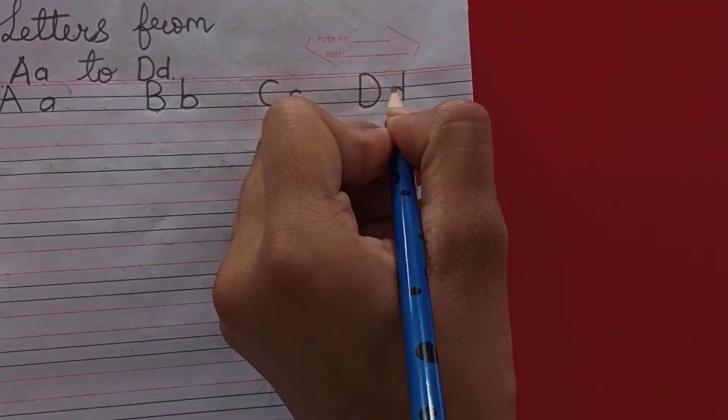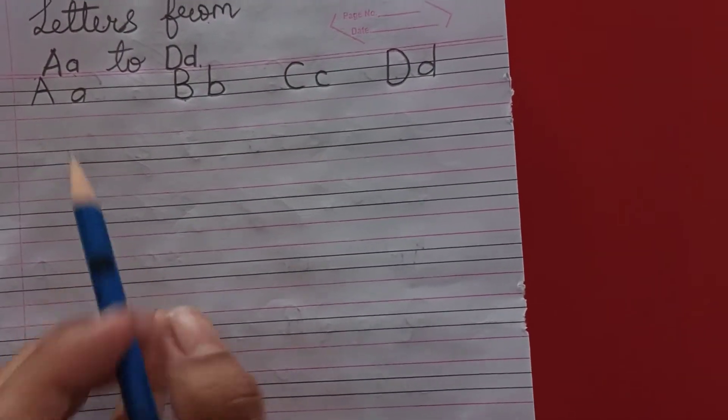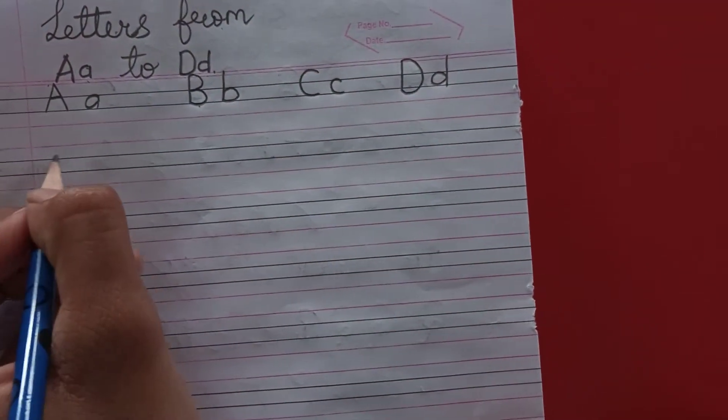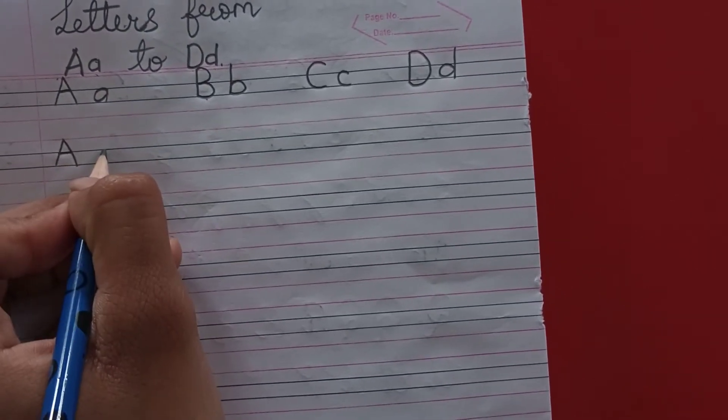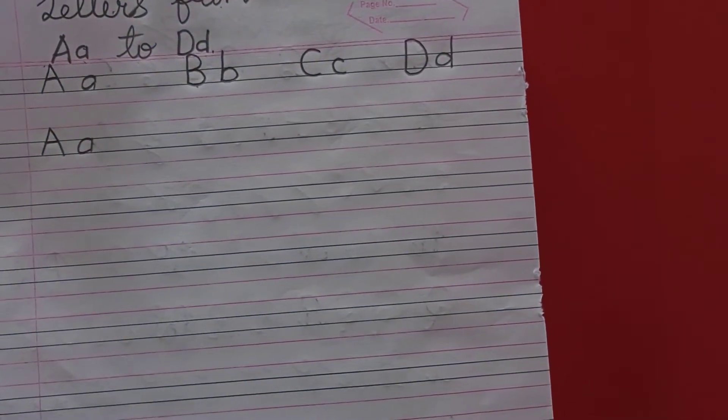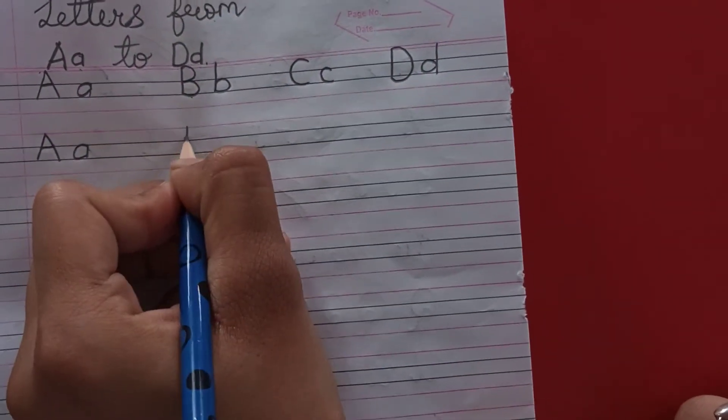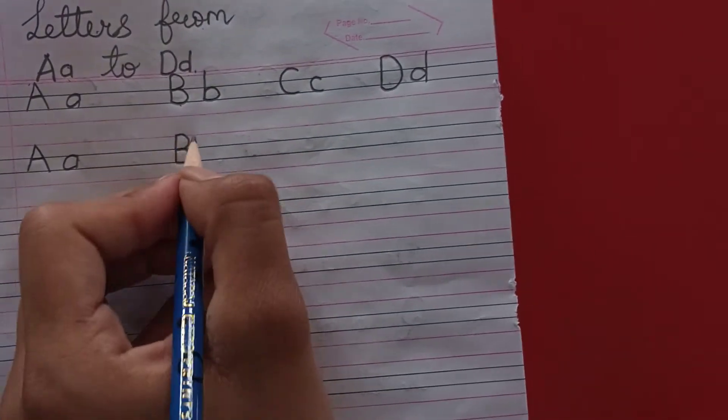D for donkey. Again, we will write capital letter A, small letter A, capital letter B, small letter B.